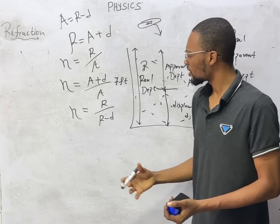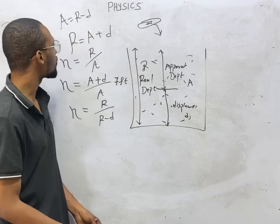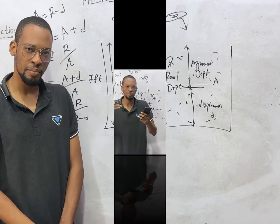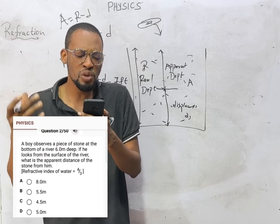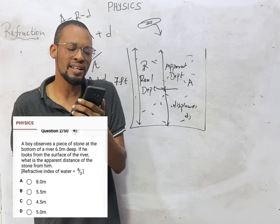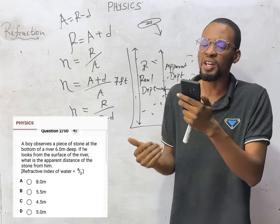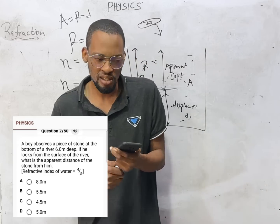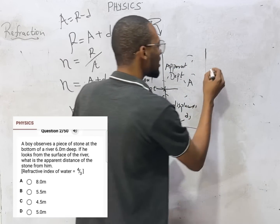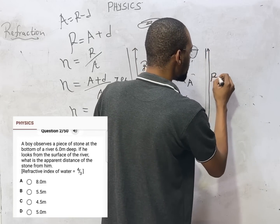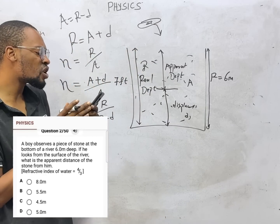Let's look at one or two or three questions to solidify our knowledge of real depth and apparent depth. A boy observes a piece of stone at the bottom of a river six meters deep. They are telling you that this river is six meters deep, so the real depth is equal to six meters.